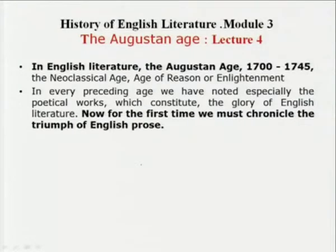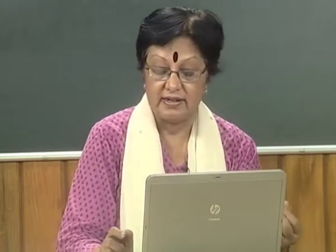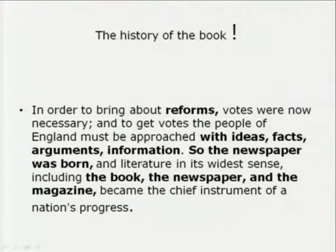In Lecture 4, the Augustan Age, it was the triumph of English prose. For the first time we chronicle the essay, the newspapers, and the emergence of the novel — how the book brought about ideas, facts, arguments, and information. The newspaper and magazine became the chief instrument of a nation's progress. And the transition between the Augustan and Romantic periods was a drastic shift in literary ideals.